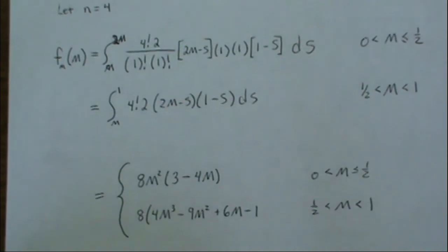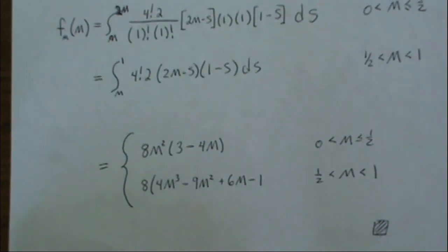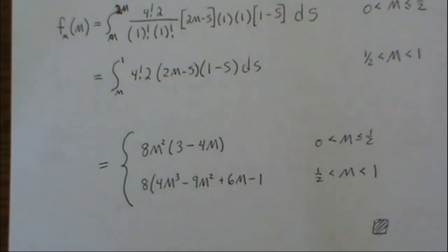So this is the density of our sample median when our data comes from a uniform zero one, and our sample size is four.